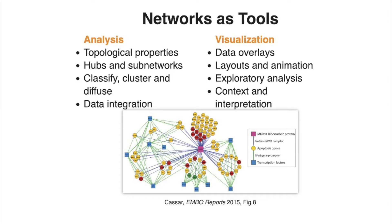Here are some basic techniques that can be applied when a system is modeled as a network. Topological properties of the network can be informative, identifying highly connected nodes, peripheral nodes, or network clusters. Clusters are sub-networks whose member nodes are more densely connected to each other than with the rest of the network. Clusters of interacting proteins may correspond to a coordinated mechanism, or complex, or at a large scale, a cellular structure like the proteasome.